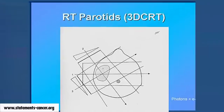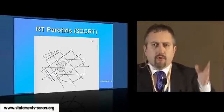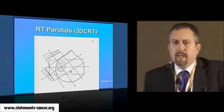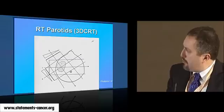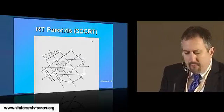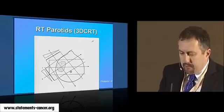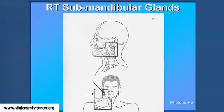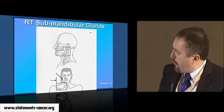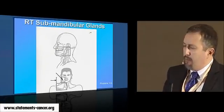In 3D conformal radiotherapy — classical ones with photons plus electrons — we have a three-field technique which avoids the contralateral parotid. That's a good treatment for parotid glands, and in this case xerostomia can be very rare if you have the opportunity to do a good 3D conformal treatment. But for other localizations like sub-mandibular glands, it's not so evident. And for minor salivary glands all along the upper aerodigestive tract, it's even more difficult.